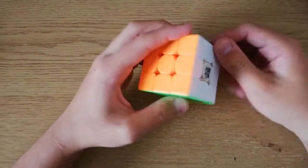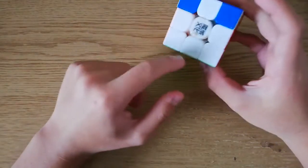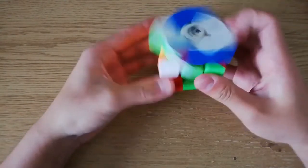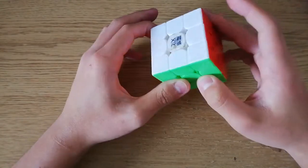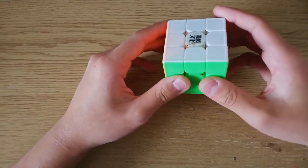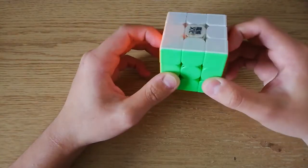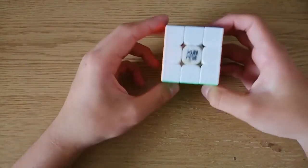It's where you have a cross made, and then you do a single algorithm and solve the whole cube. So I think there are about 493 algorithms, and not many people know all of them, so I might as well just learn it.